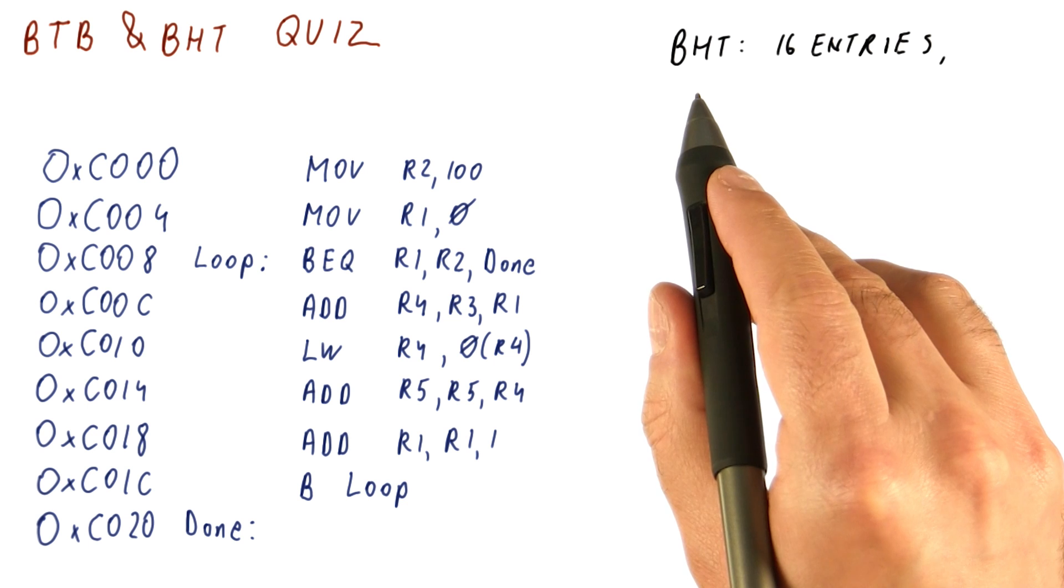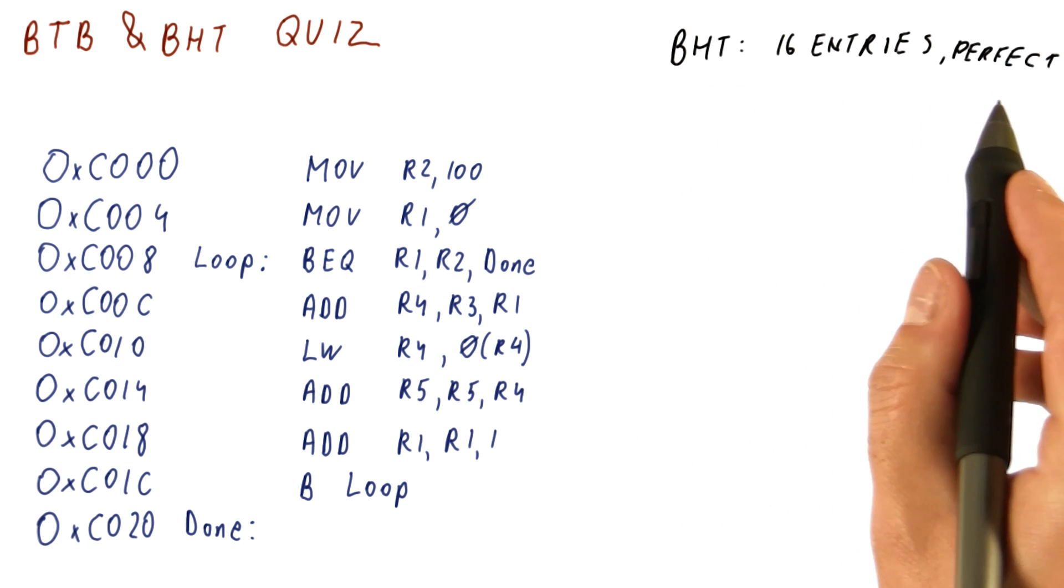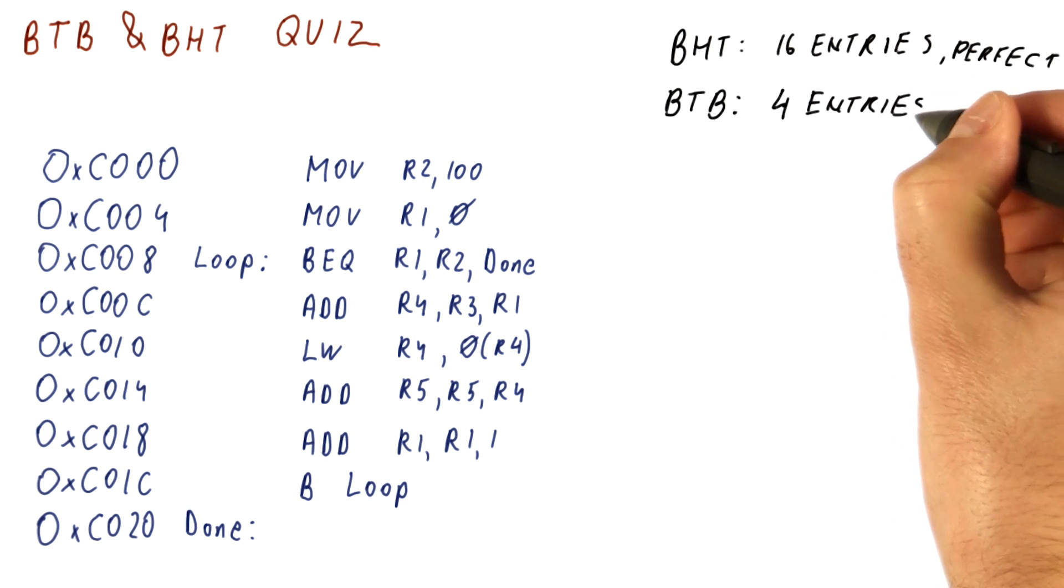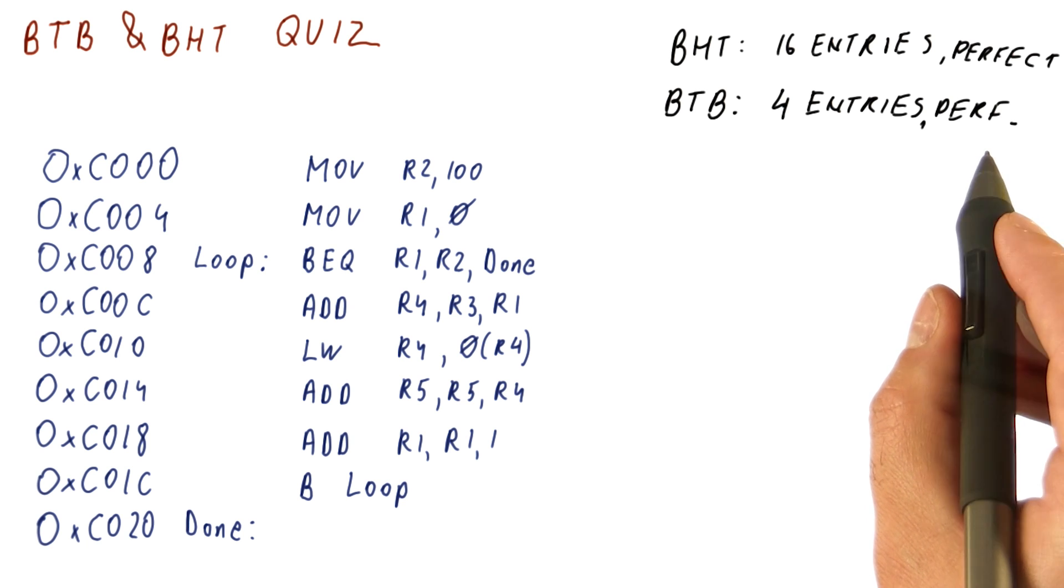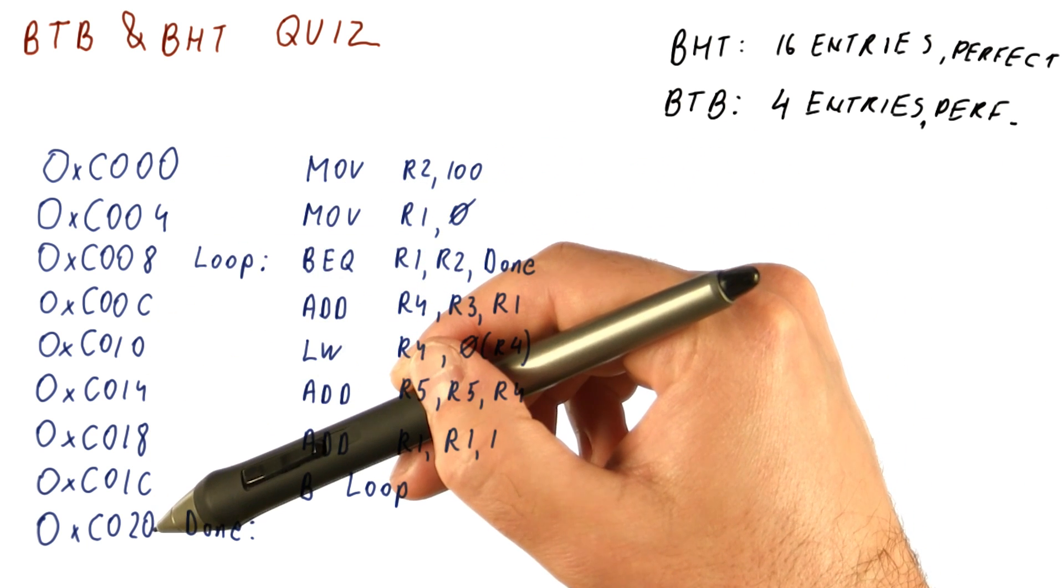Suppose that we have a branch history table that has only 16 entries and makes perfect predictions about branches. Suppose we also have a BTB with four entries, also makes perfect predictions. And as you can see, all instructions are four bytes in size, and we know that.